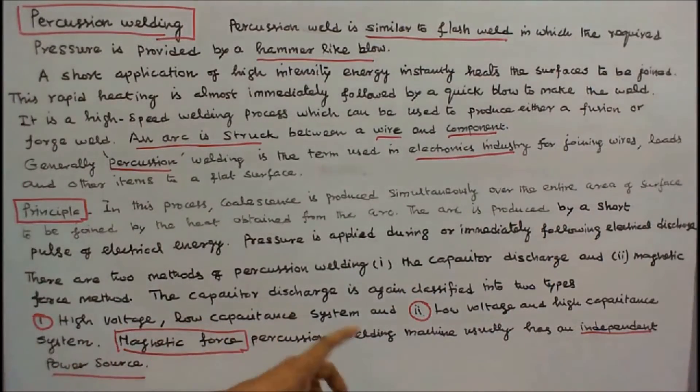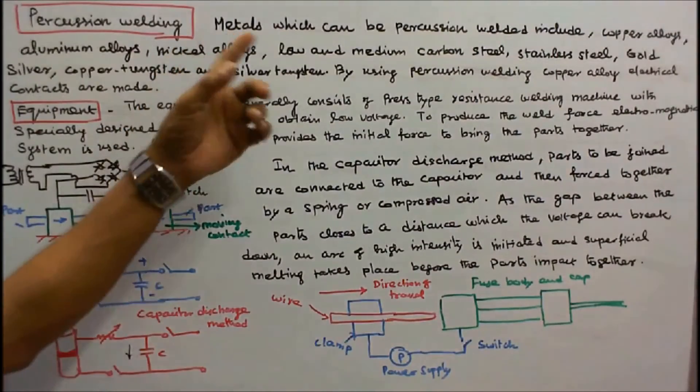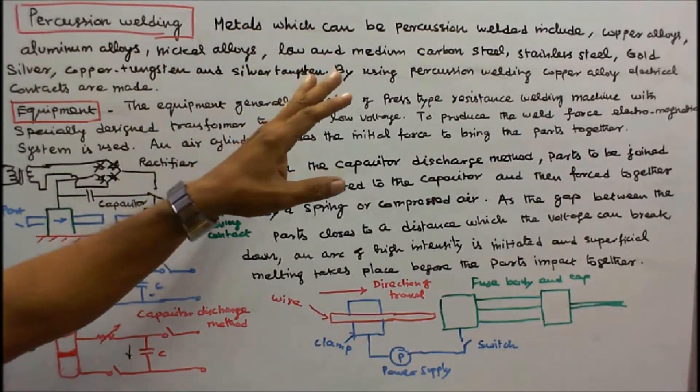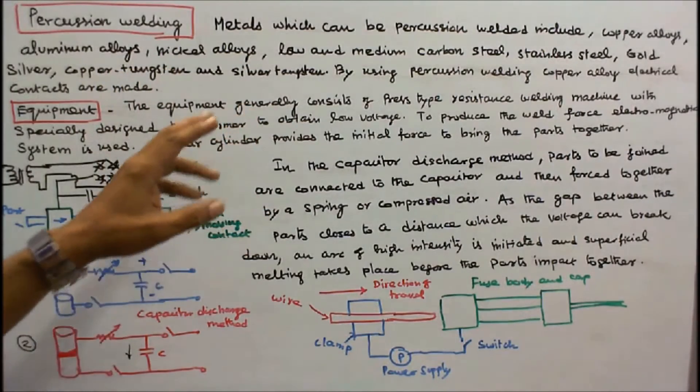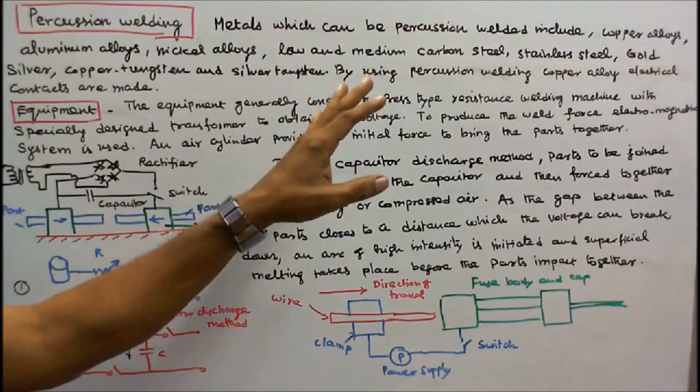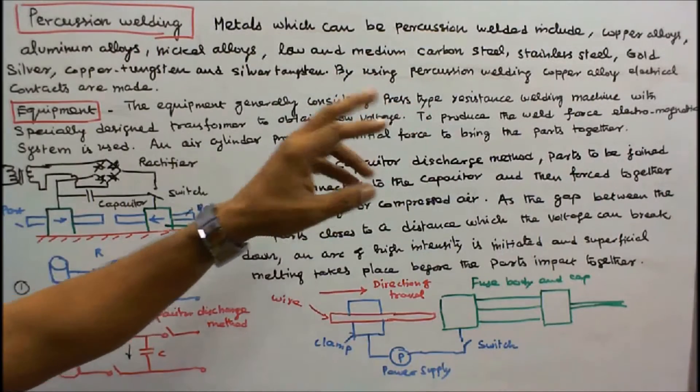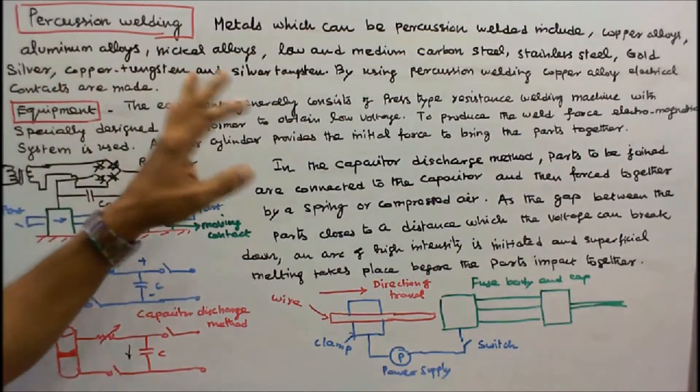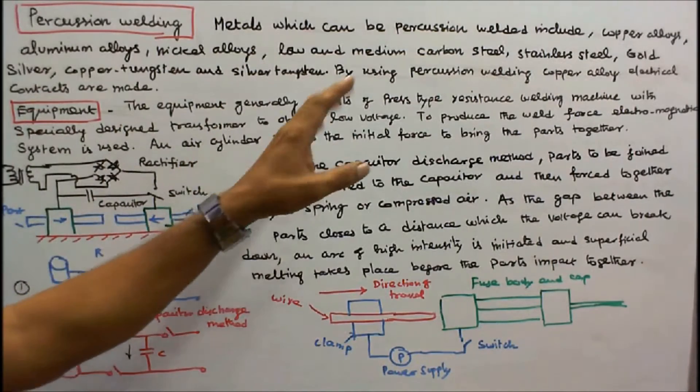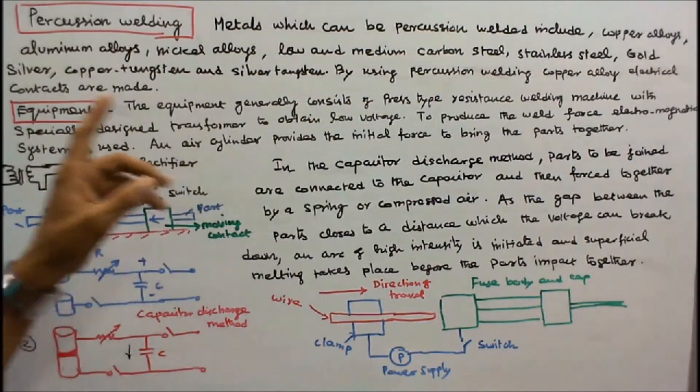Magnetic Force Percussion Welding Machine usually has an independent power source. Metals which can be Percussion Welded include Copper Alloys, Aluminium Alloys, Nickel Alloys, Low and Medium Carbon Steel, Stainless Steel, Gold, Silver, Copper, Tungsten and Silver Tungsten. By using Percussion Welding, copper alloy electrical contacts are made.